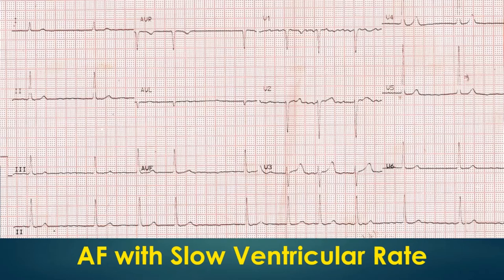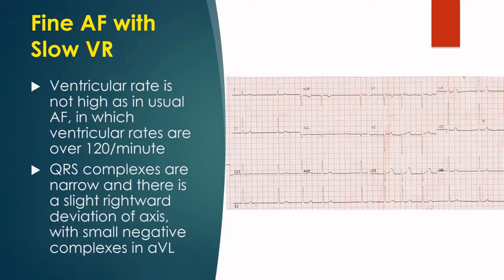Coarse atrial fibrillation usually indicates larger reentrant circuits and hence larger atria. It is classically seen in mitral stenosis with large left atrium. In this case with fine atrial fibrillary waves, the ventricular rate is not high as in usual atrial fibrillation, in which ventricular rates are over 120 per minute.